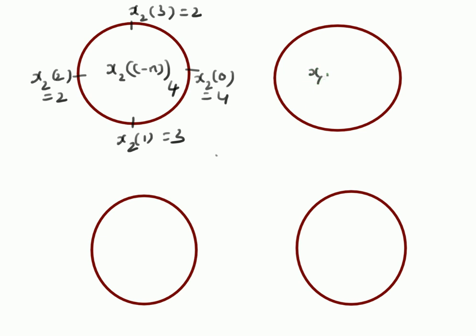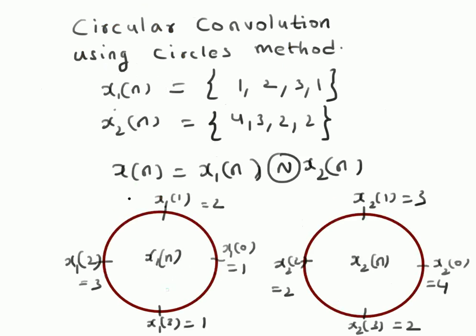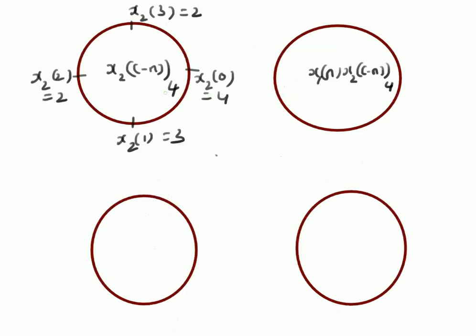This circle will contain the product of x1(n) multiplied by x2(-n mod 4) — that is, the product of numbers on the first circle with numbers on this reversed circle. The values are 4, 4, 6, and 3, because we are multiplying 4×1, 2×2, 3×2, and 3×1. The sum x(0) is equal to seventeen.